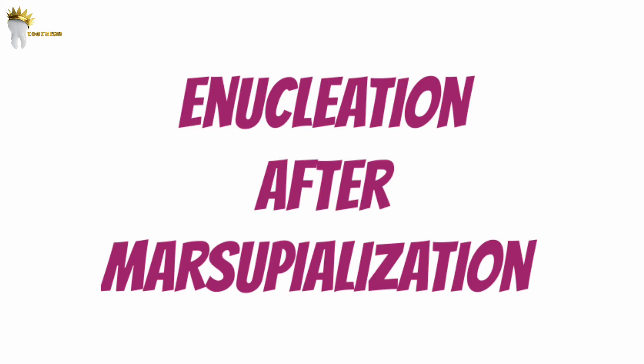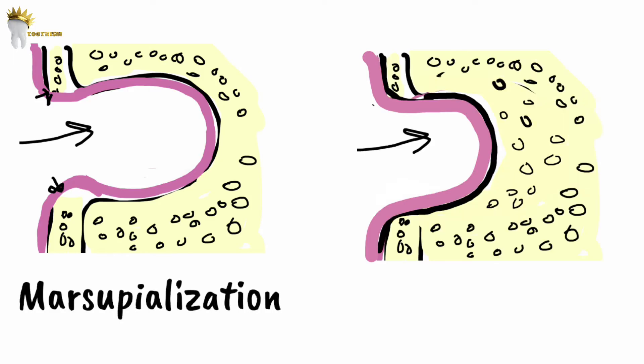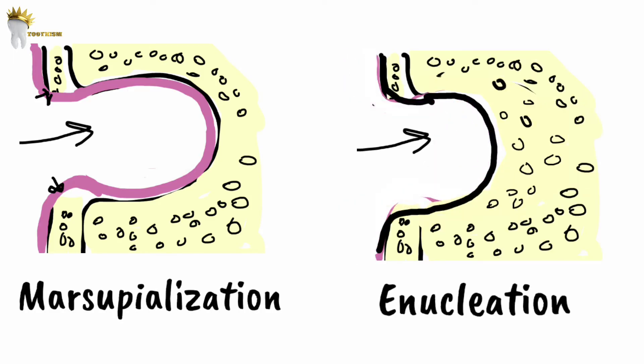Let's discuss the next treatment modality, i.e. enucleation after marsupialization. We have seen that sometimes we first do marsupialization and do enucleation at a later date. The objective is to decrease the size of the cavity. Once that is achieved, a secondary enucleation can be done without causing injury to adjacent structures. In 6-12 months after marsupialization, sufficient bone formation takes place and enucleation can be performed.